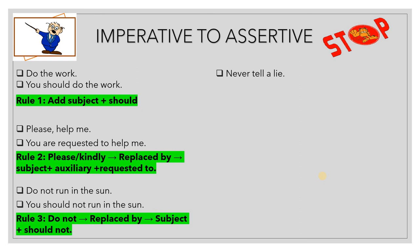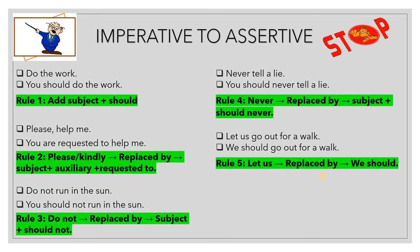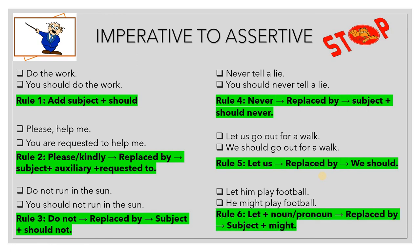'Never tell a lie' becomes 'You should never tell a lie' — a kind of command or request; 'never' is replaced by subject and 'should never.' 'Let us go out for a walk' becomes 'We should go out for a walk' — this is an entreaty; 'let us' is replaced by 'we should.' 'Let him play football' becomes 'He might play football' — 'might' shows entreaty. 'Let' plus noun or pronoun is replaced by subject plus 'might.'